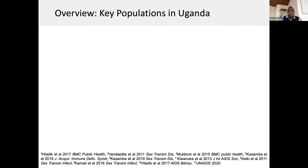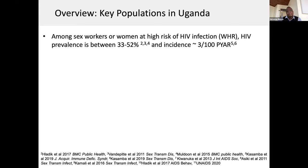I'll briefly talk about key populations in Uganda, starting with sex workers or women at high risk of HIV infection. The prevalence in this group is estimated between 33 to 52%, and incidence at about 3 per 100 person-years at risk. As you can see, those are really high figures.